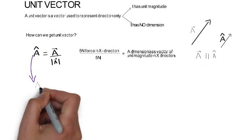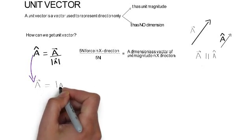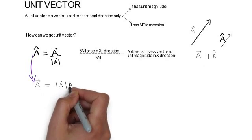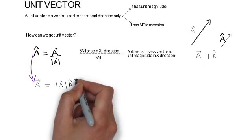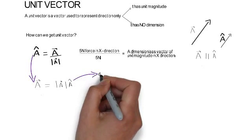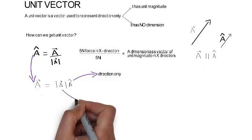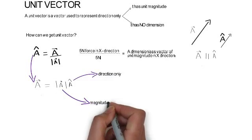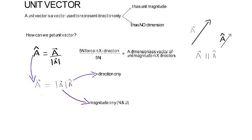we can say a vector will be equal to magnitude of a multiplied by a cap. Here, a cap represents only the direction part of a vector, and modulus of a represents the magnitude part of the vector. The magnitude includes the numerical value as well as the unit. Thus any vector quantity can be said to be a product of its magnitude and its direction — the magnitude is represented by the modulus and the direction is represented by the unit vector.